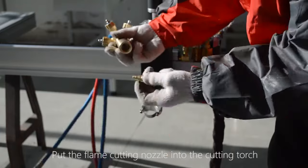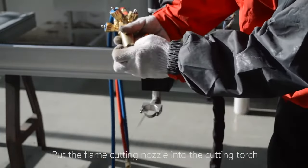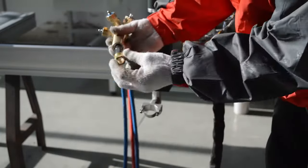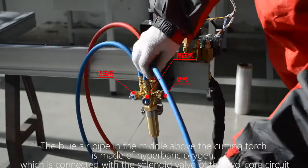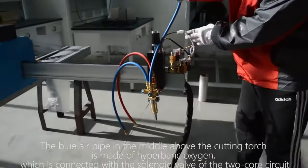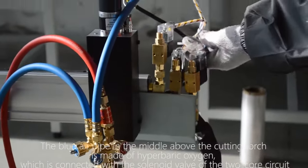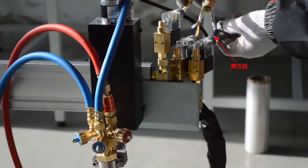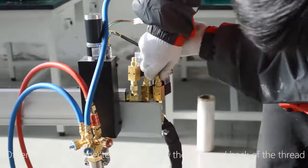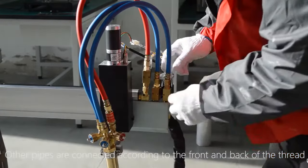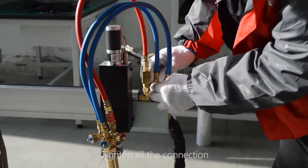Put the flame cutting nozzle into the cutting torch. The blue air pipe in the middle above the cutting torch is made of hyperbaric oxygen which is connected with the solenoid valve of the two core circuit. Other pipes are connected according to the front and back of the thread. Tighten all the connection.